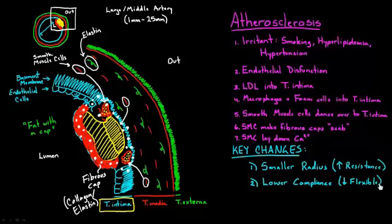So those are the big changes that you see. The lower radius increases resistance. The lower compliance means that it's harder for these large and middle-sized arteries to expand like a balloon every time the blood pulses through. So both those things are going to cause increase in your blood pressure.